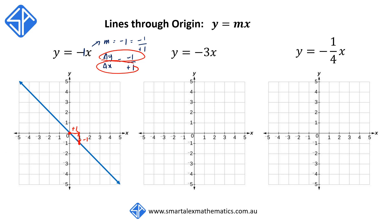Our next example is y is equal to negative 3x. This time m is equal to negative 3, so we can write this as negative 3 over plus 1, giving Δy over Δx equals negative 3 over plus 1.